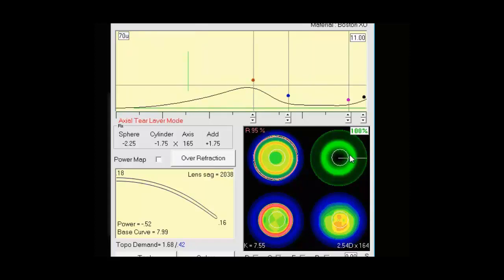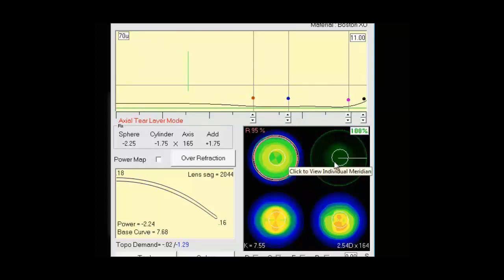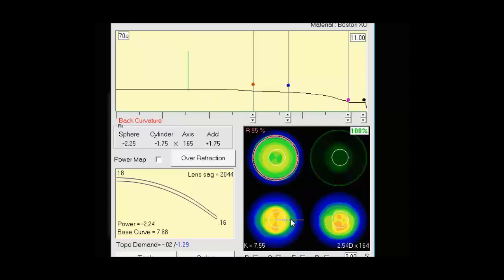If we toggle over to the fluorescein view you'll see that we have a simulated fluorescein pattern. And it goes back to our tier layer clearance view. And if we alter the lens you'll see it immediately changes the fluorescein view. In the lower left we have the back curvature of the contact lens. And you can come up here and analyze the curves by clicking down. And you'll see in the upper left it shows what curves we are at a specific point. As well as the sag value of the lens will change as well in the lower left portion of our screen.